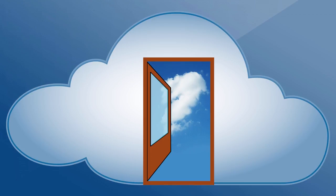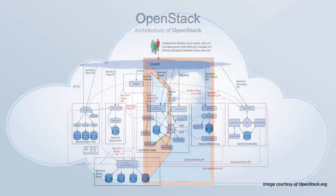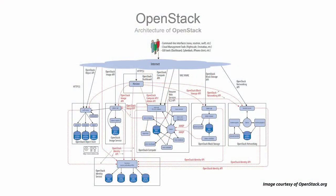OpenStack is a free and open-source software platform for building and managing your own IaaS cloud infrastructure. The software platform consists of interrelated components that control hardware pools of processing, storage, and networking resources throughout a data center.